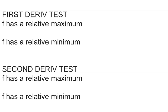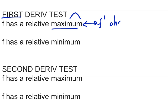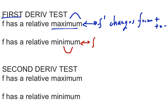Here's how the relationships break down. For the first derivative test, f has a relative maximum when f prime changes from positive to negative. The opposite is true for a relative minimum — f prime changes from negative to positive.